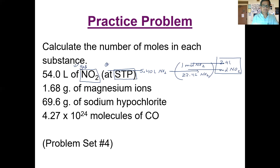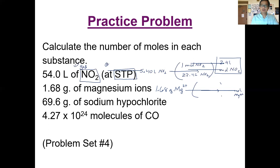The second one: we're starting with 1.68 grams of magnesium ions — Mg²⁺, which means it has lost two electrons — and we want to find the moles. Don't let the fact that this is an ion throw things off. Remember, electrons are 2,000 times less massive than protons and neutrons combined, so the mass of any atom, whether charged or neutral, will still be the same.